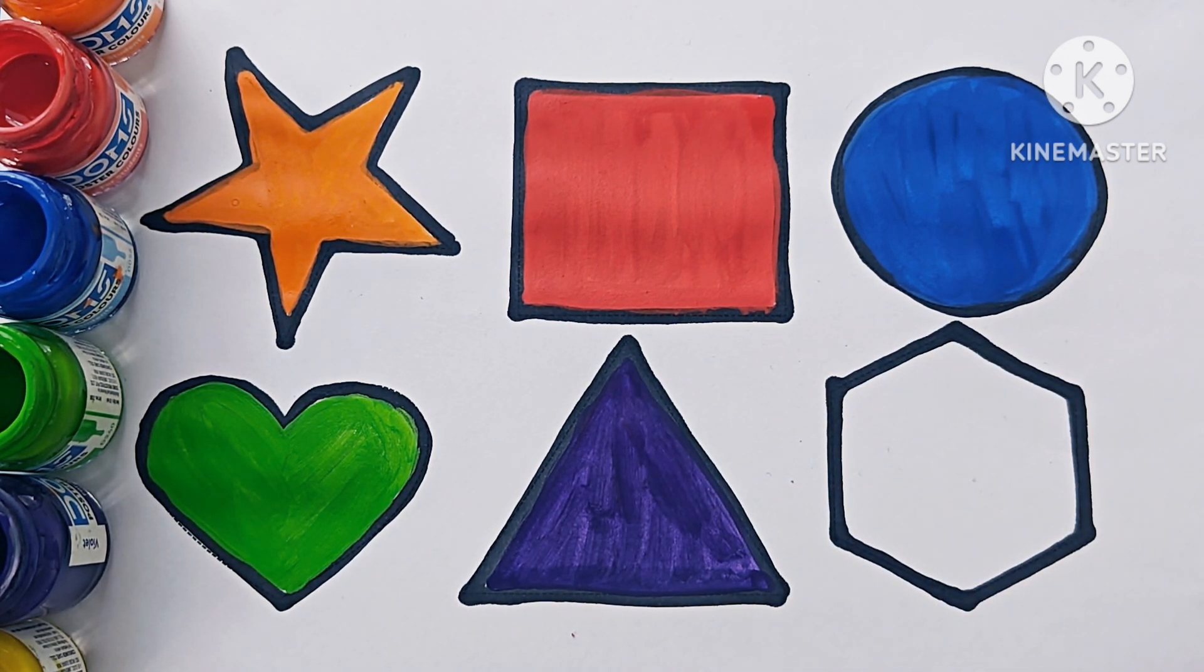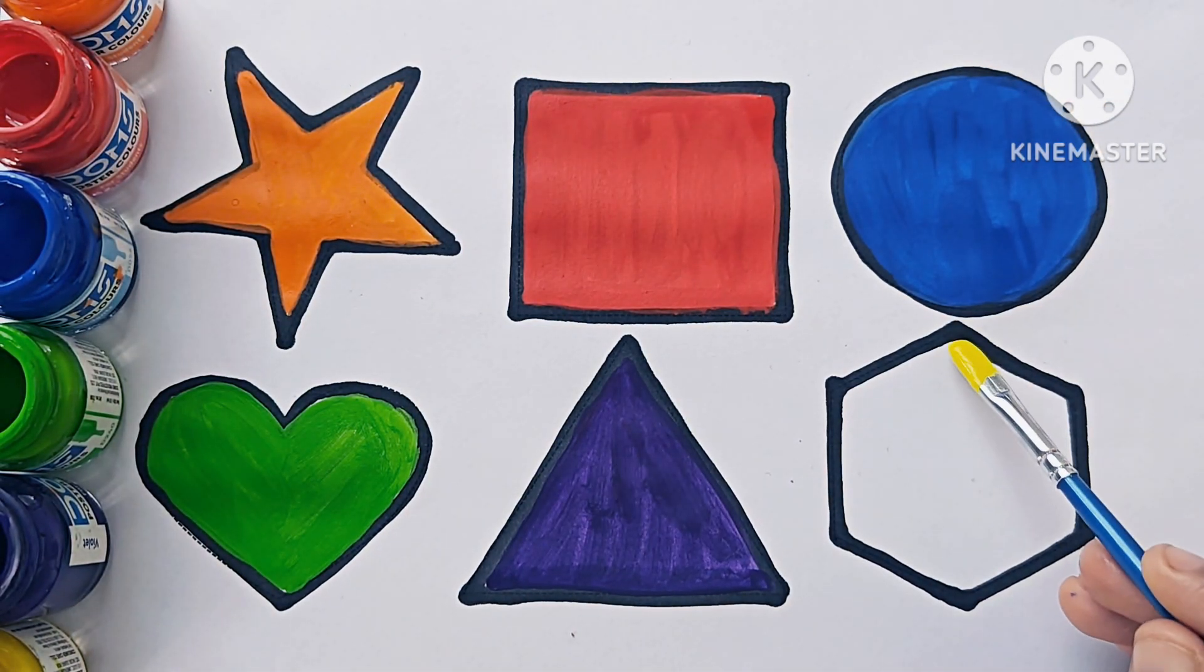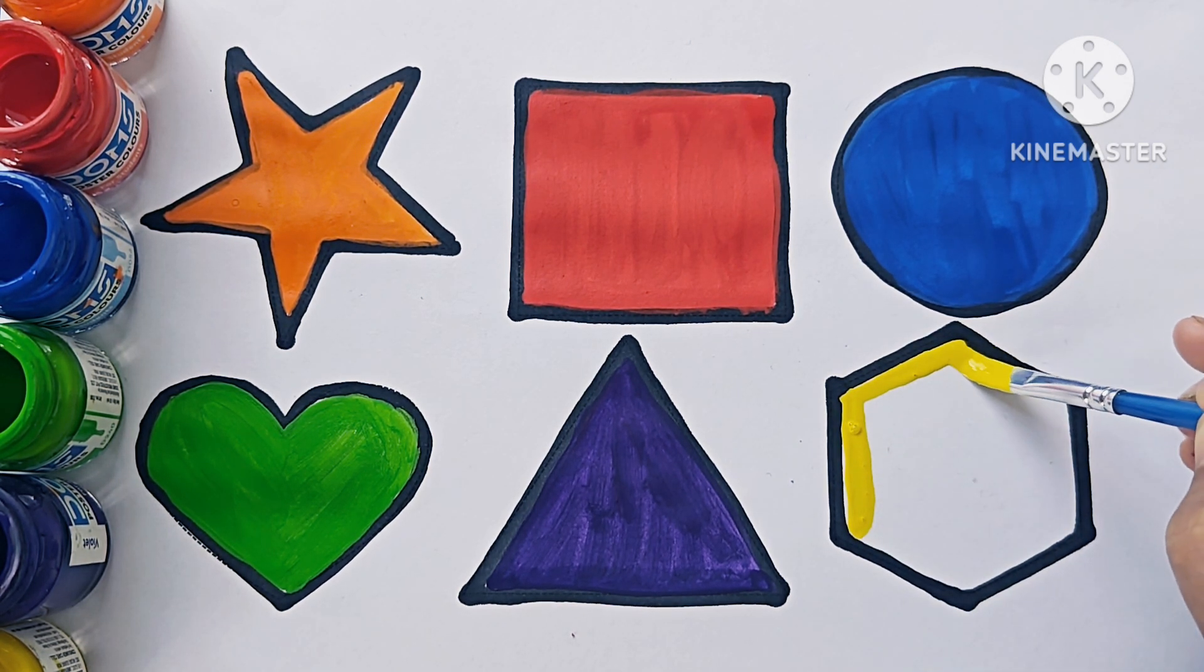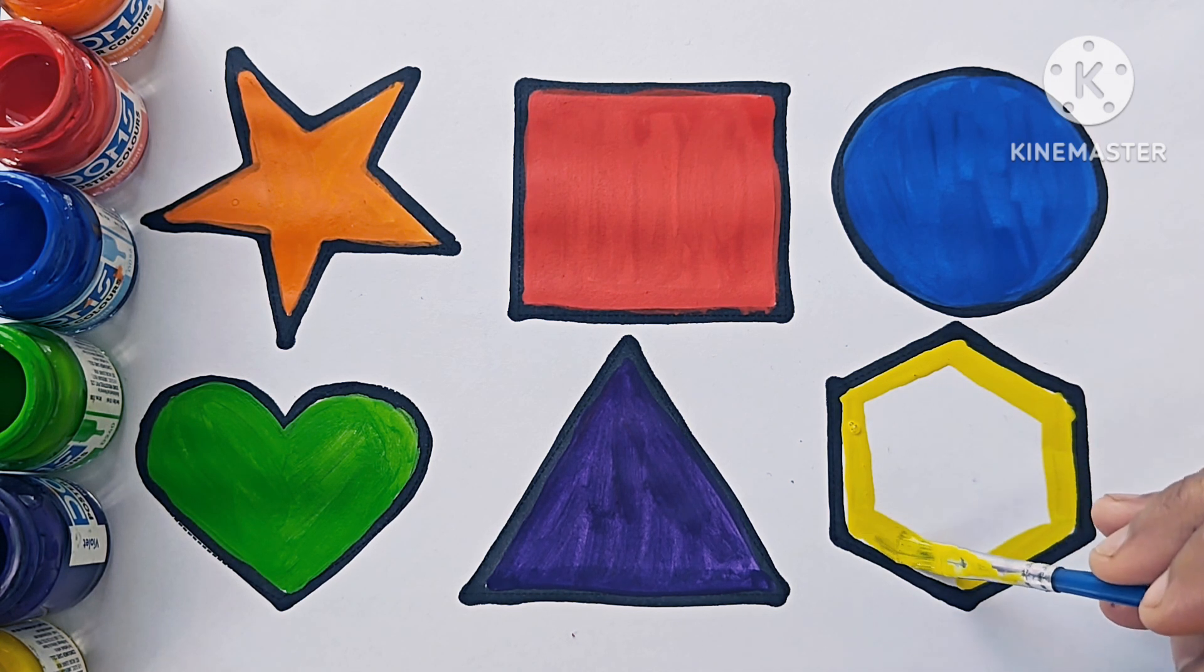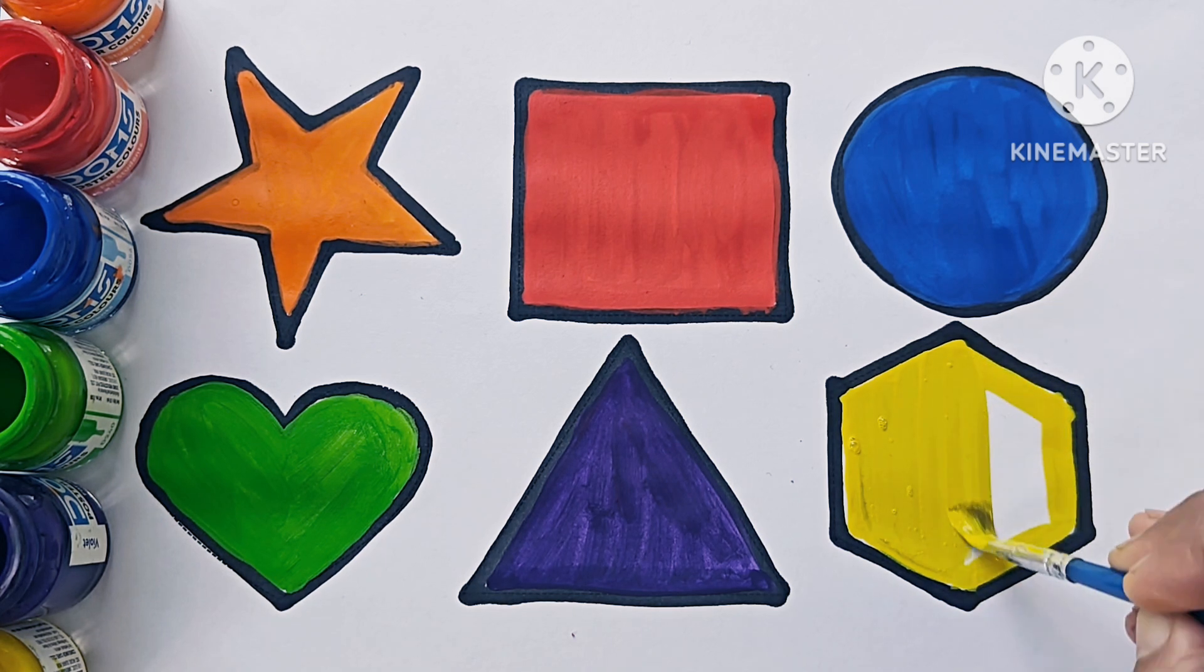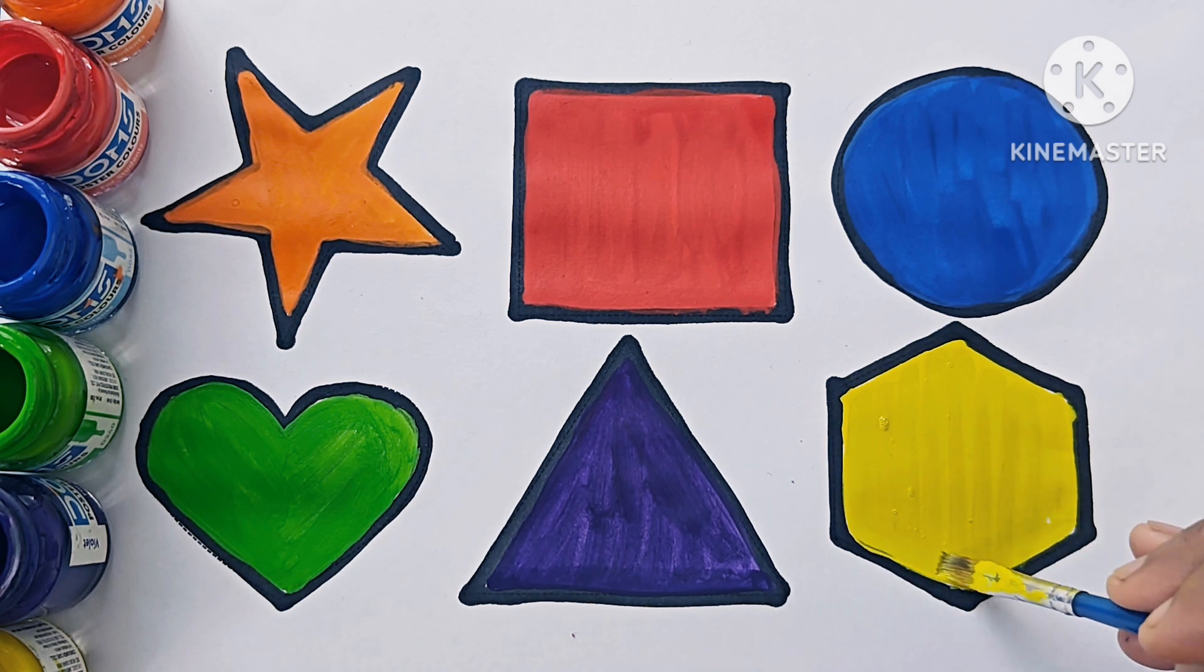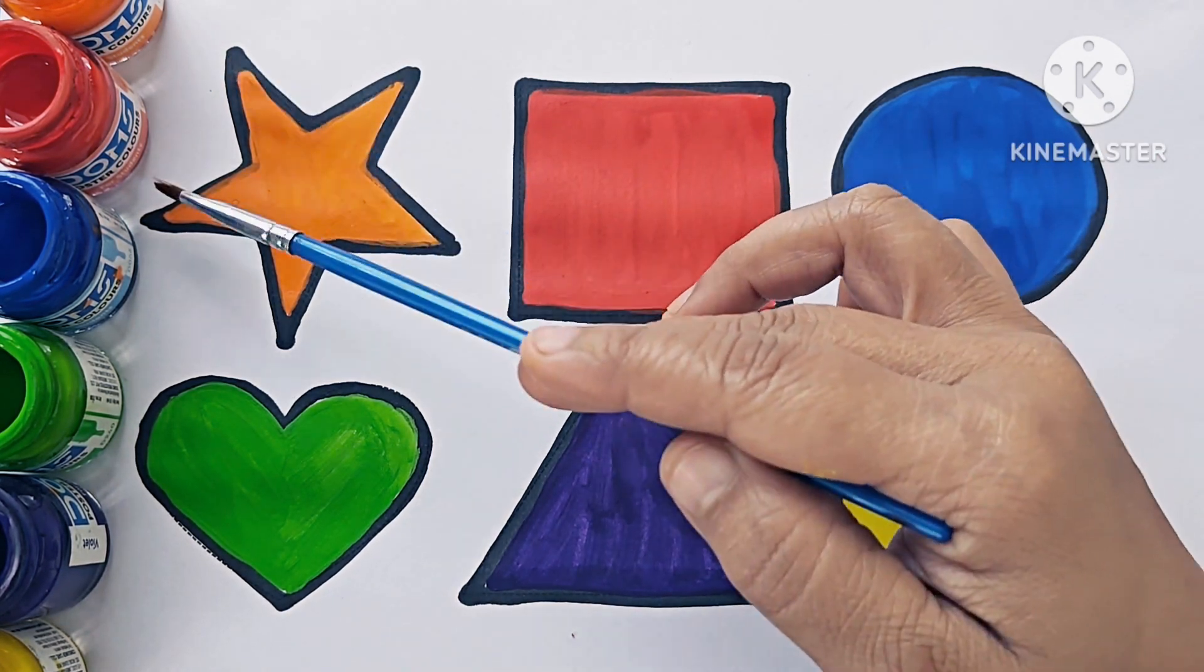Triangle. Yellow color, yellow color. It has five points: one, two, three, four, five.